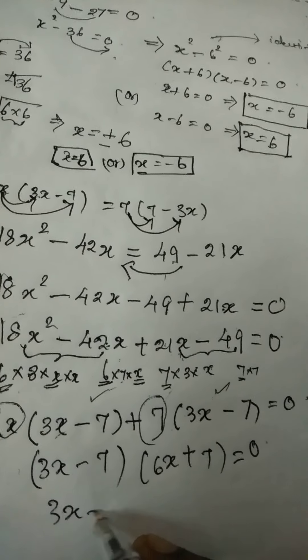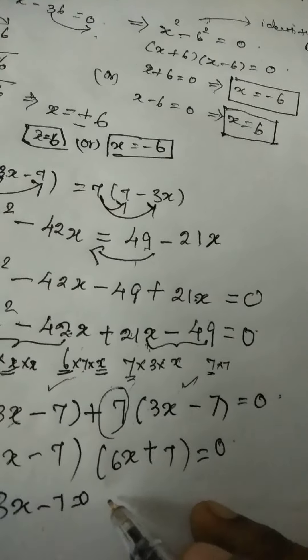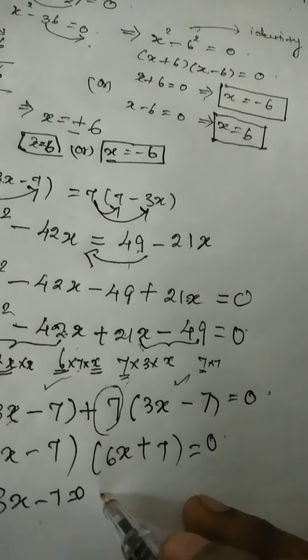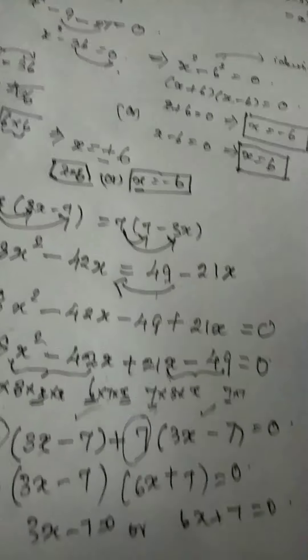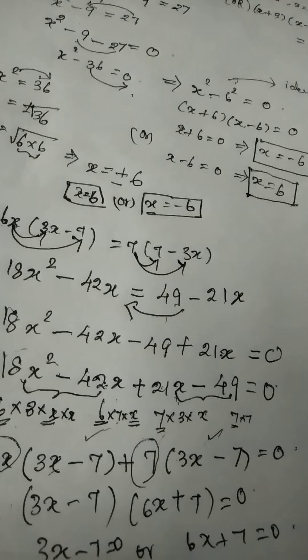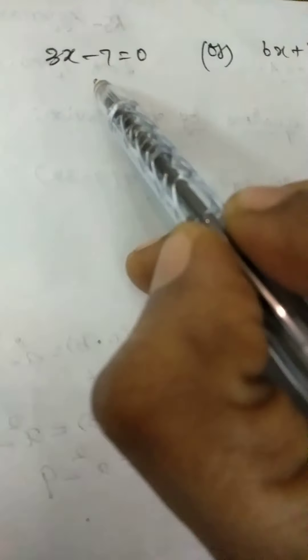So after you have reached the linear factor what is the procedure we want to equating to 0 separately? So 3x minus 7 equal to 0 or 6x plus 7 equal to 0. So we have reached 3x minus 7 equal to 0 or 6x plus 7 equal to 0.